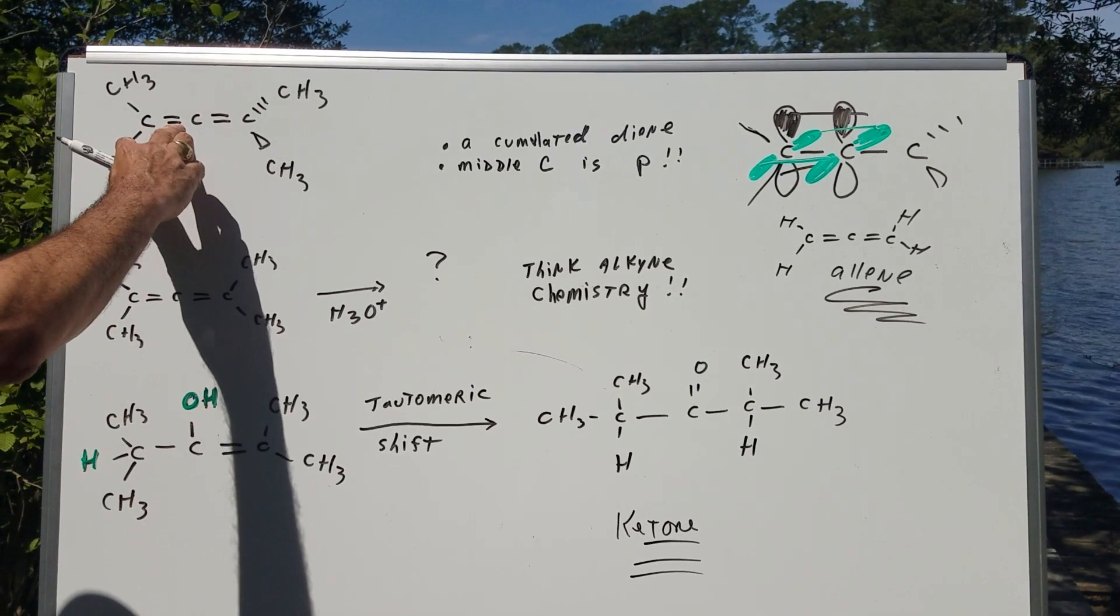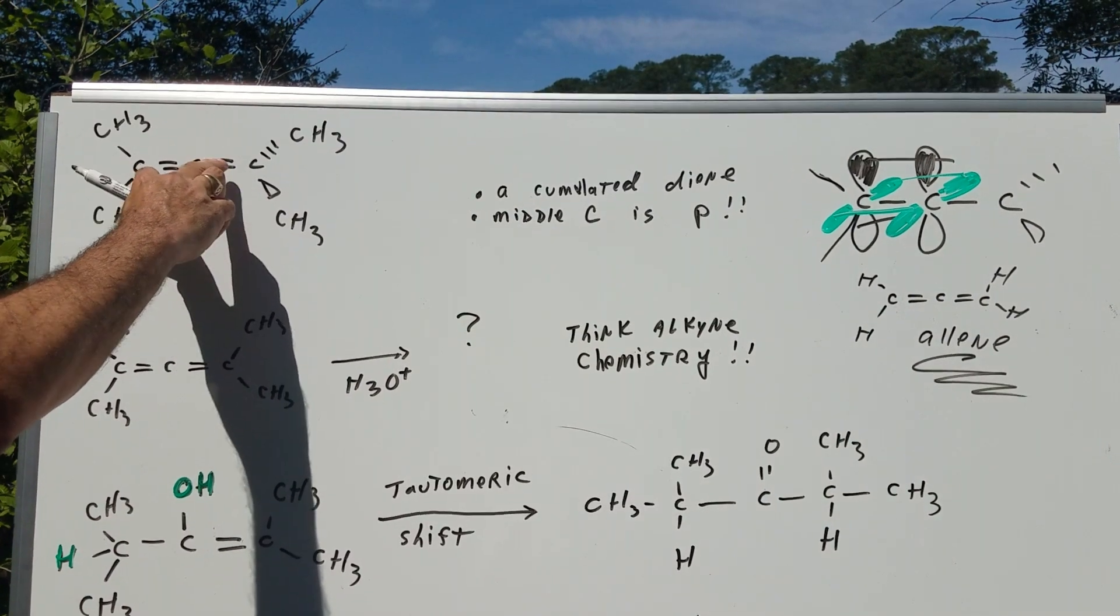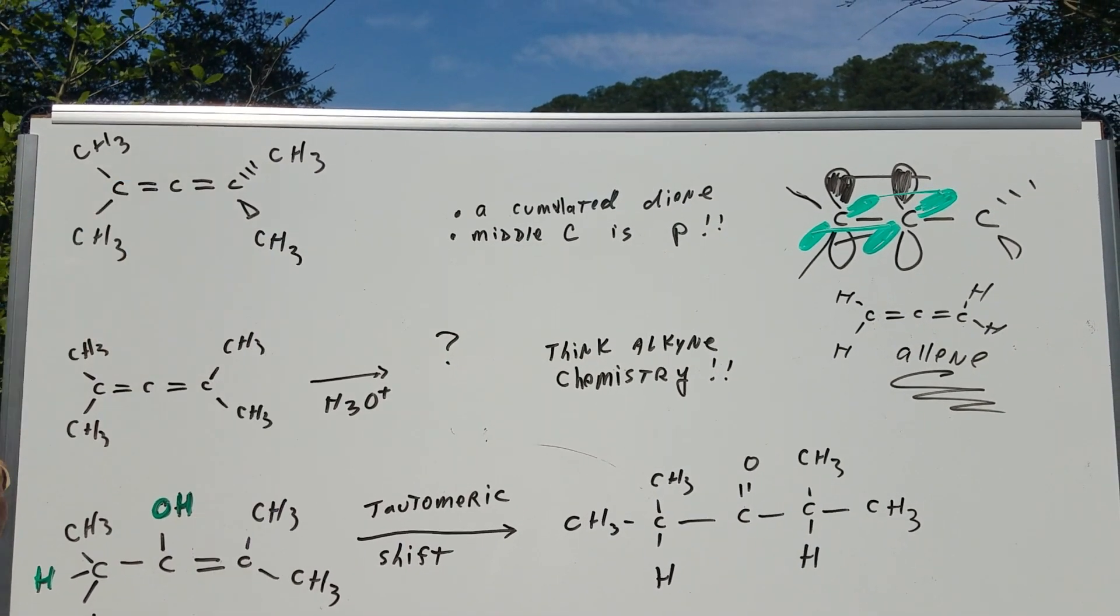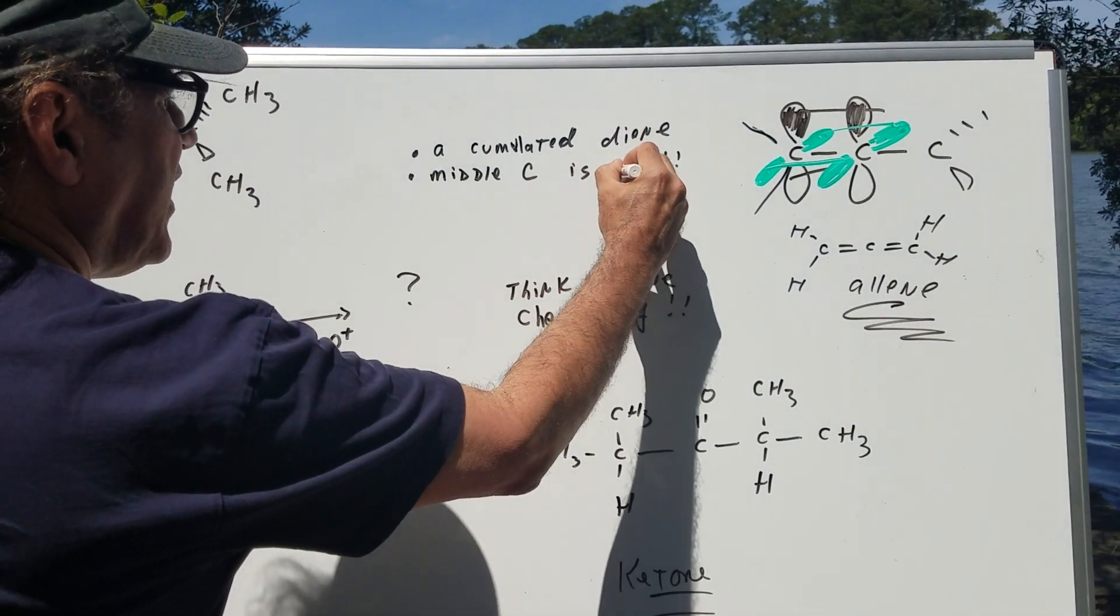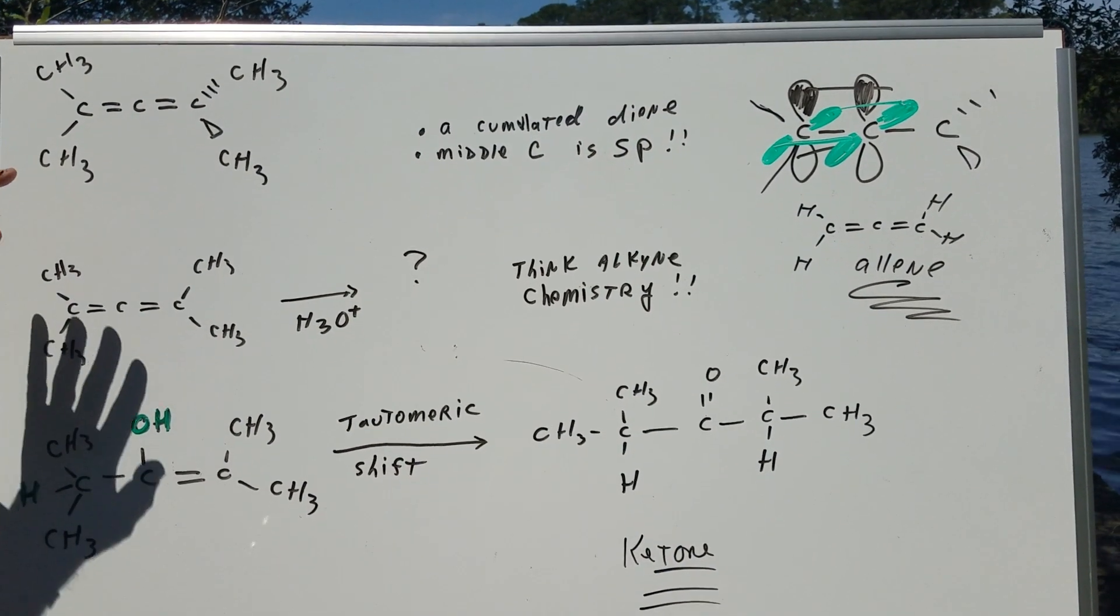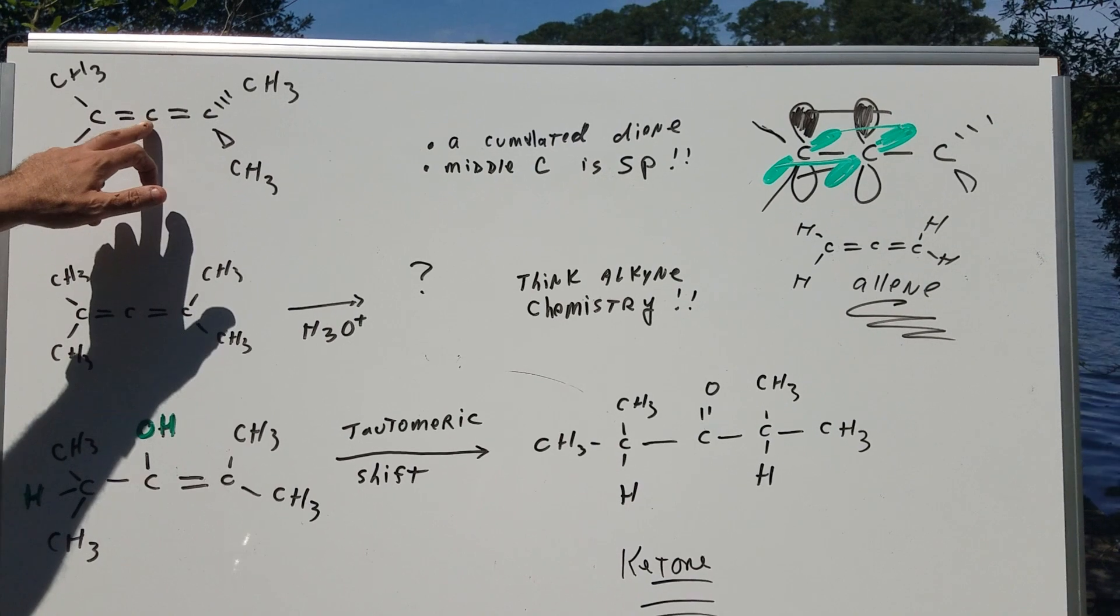Cumulated means that you have a carbon, and then there's a multiple bond on either side of the carbon. And that middle carbon is going to be an sp carbon.